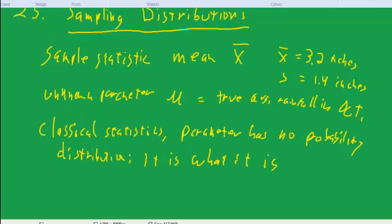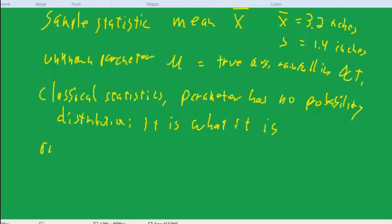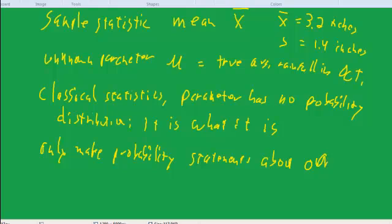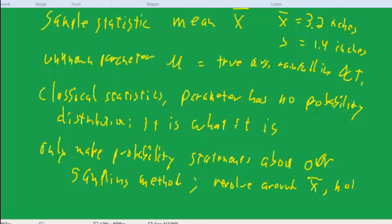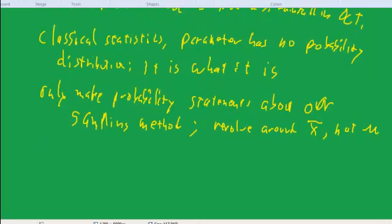We can only make probability statements about our sampling method. In practice, our probability statements revolve around X-bar, not μ. That might explain a little bit how we start out.